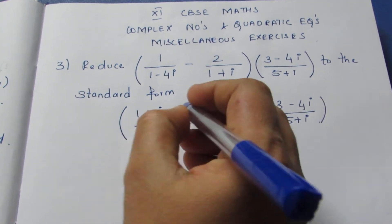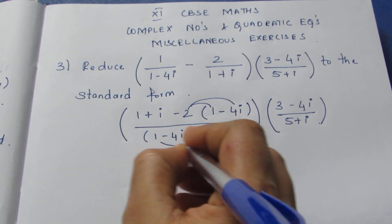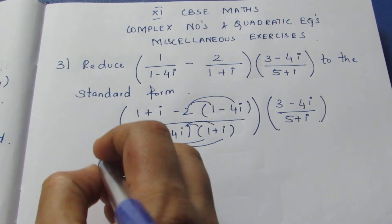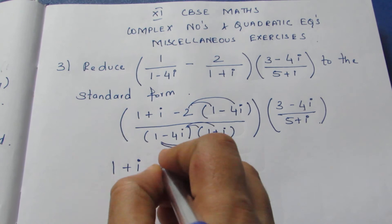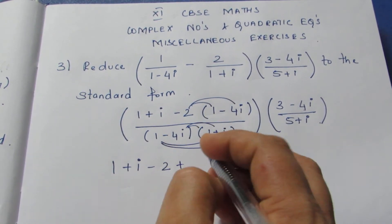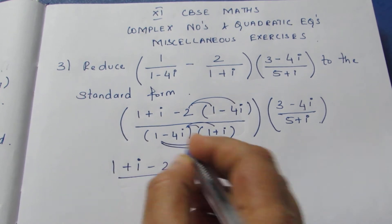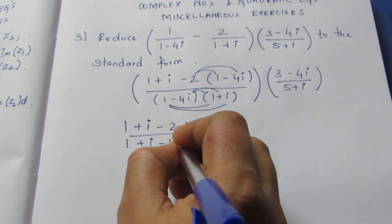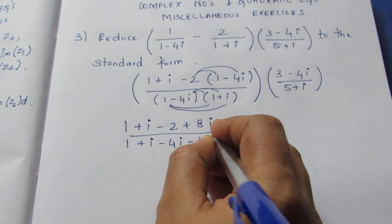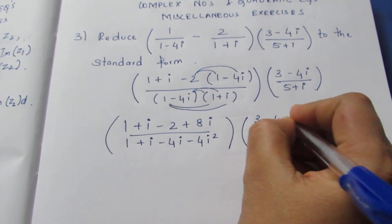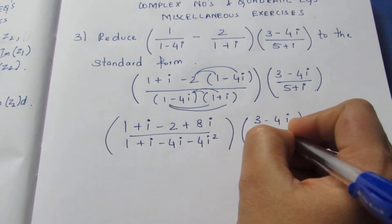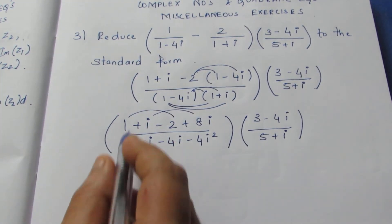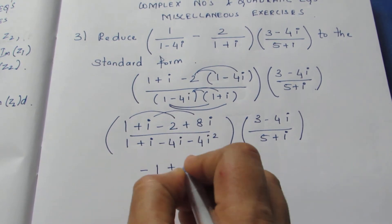Now multiply 2 inside — doing binomial multiplication: 1 multiplied by both terms, similarly 4i multiplied by both terms. Solving this I get 1+i, then it becomes −2 and minus into minus becomes plus, so plus 8i. In the denominator it becomes 1+i minus 4i minus 4i². Now solving the like terms: 1−2 becomes −1, and +9i.